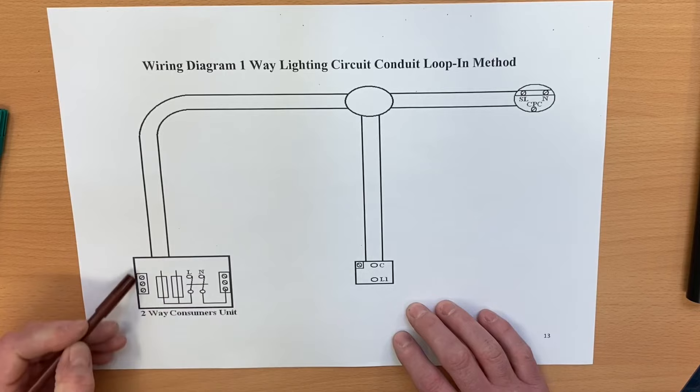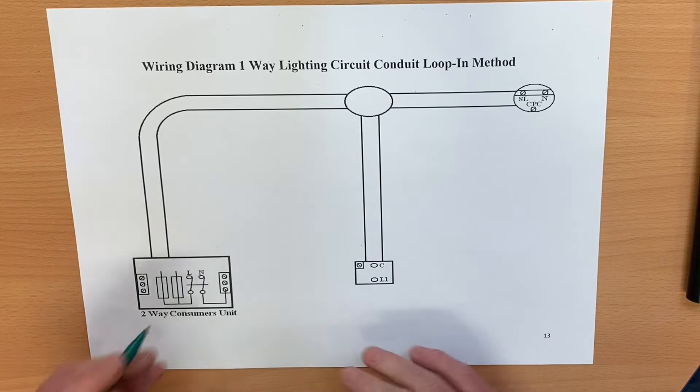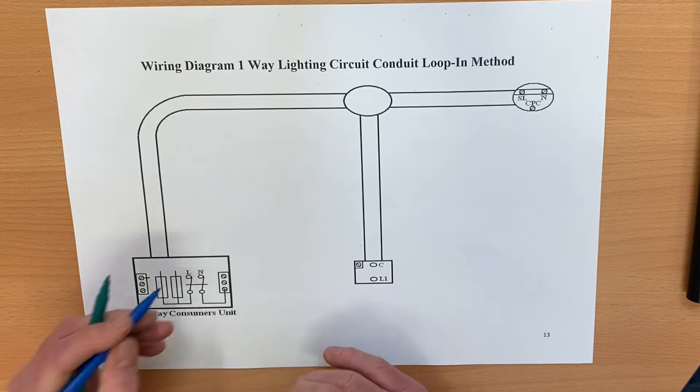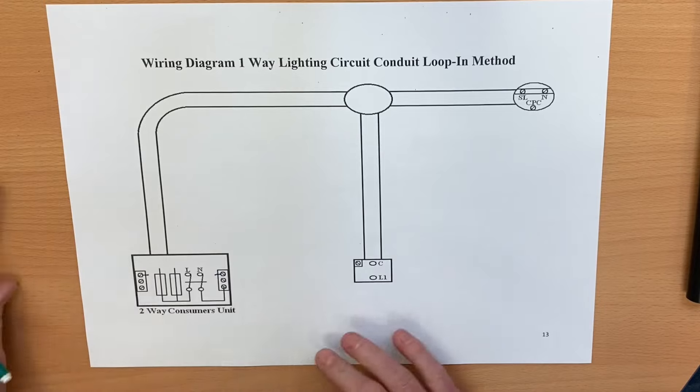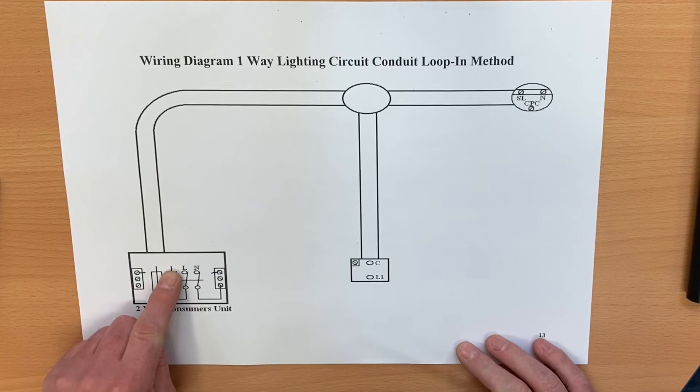First of all, we've got to work out where our line connections coming out of here, our neutral, and our CPC. This one here is our CPC, this one here will be our neutral. We've got these here showing our two overcurrent protection devices. We've only got one circuit coming out of here, so we're going to come out of the first circuit breaker, which will be our 6 amp one closest to our main switch.